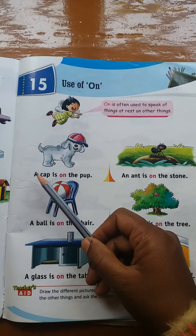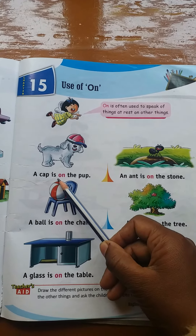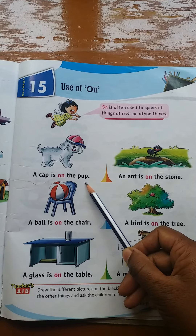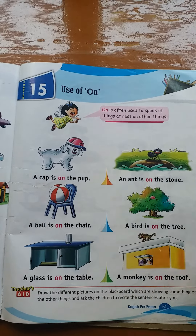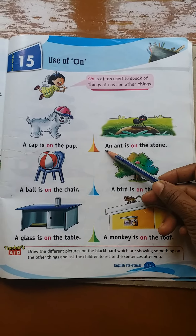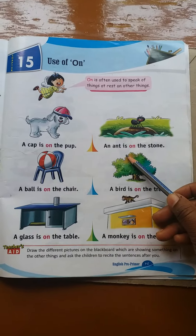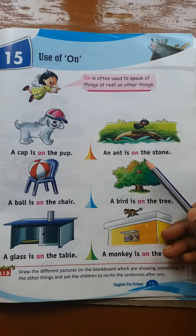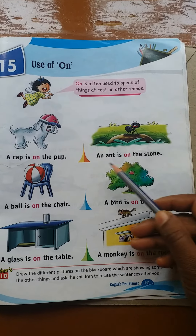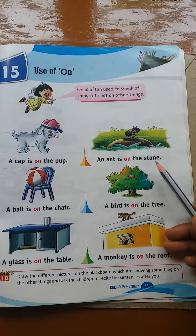Let's read with spelling. A cap — C-A-P — is on the tub. A cap is on the tub. Now see: an ant — A-N-T — is on the tub.